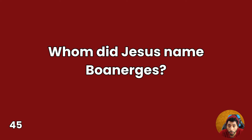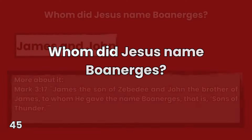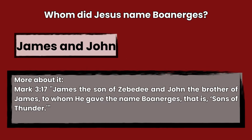Question 45: Whom did Jesus name Boanerges? Answer: James and John. Mark 3:17 — James the son of Zebedee and John the brother of James, to whom he gave the name Boanerges, that is, sons of thunder.